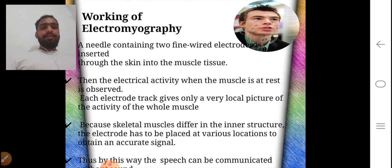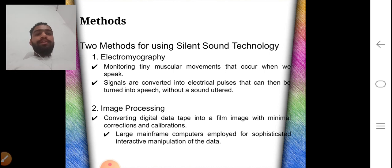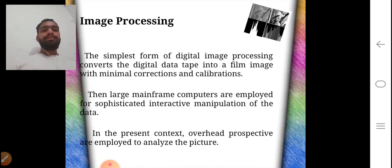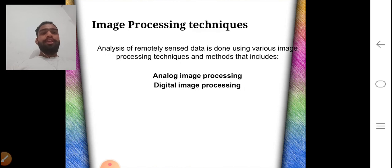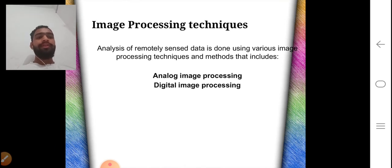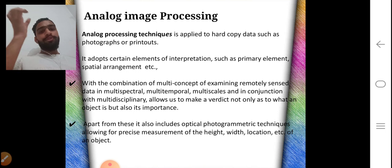As we discussed, these methods of silent sound technology, one is electromyography and second one is image processing. Now we discuss image processing. The simplest form of digital image processing converts the digital data tape into a film image with minimal correction and calibration. Large mainframe computers are employed for sophisticated interaction manipulation of the data. Image processing technique analyzes remotely sensed data using various image processing techniques and methods that includes analog and digital image processing. First of all we discuss analog image processing. Analog processing technique is applied to hard copy data. Hard copy data are photographs and printouts, so this type of technology is applied to hard copy data.